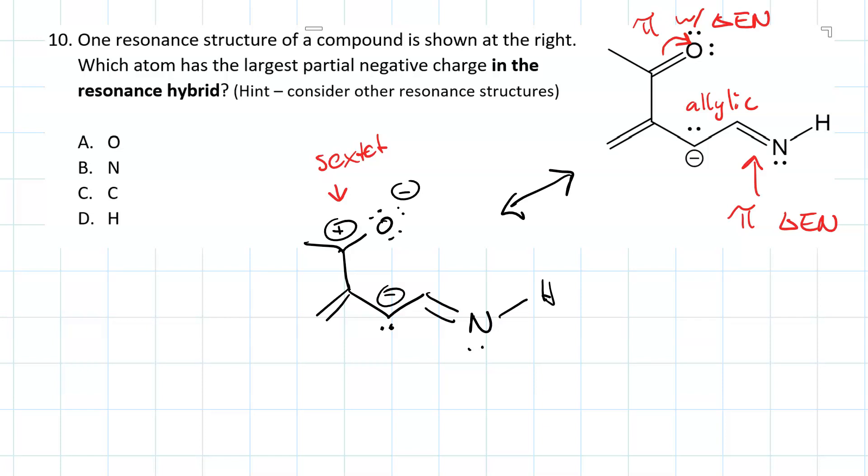So, then maybe we can fix that sextet by putting that pi bond there. But now we have another carbocation with the sextet. So, neither of those are very good.